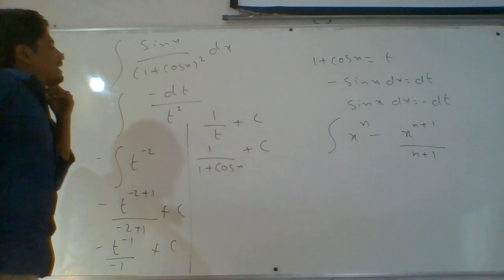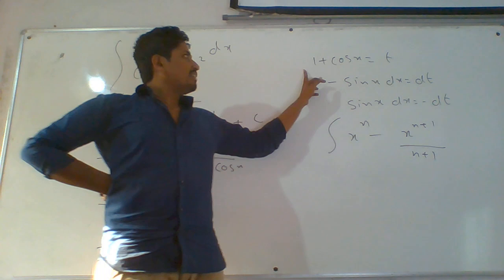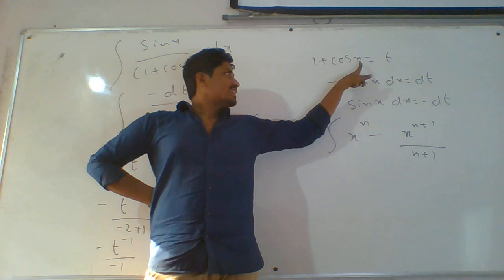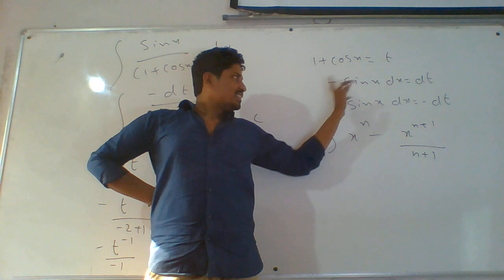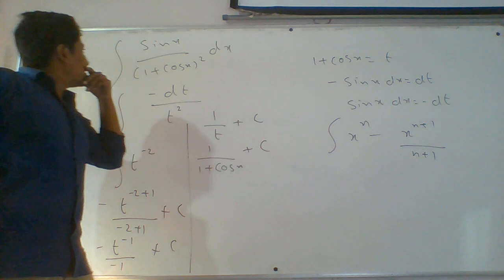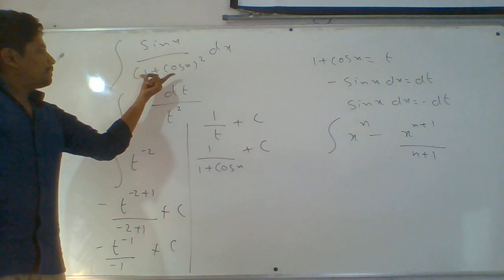In this problem we assumed 1 plus cos x as t. Apply derivative on both sides: derivative of 1 is 0, for cos x it is minus sin x dx, giving dt. Send the minus to that side: sin x dx equals minus dt. In the place of sin x dx we substituted minus dt, and in the place of 1 plus cos x we put t.